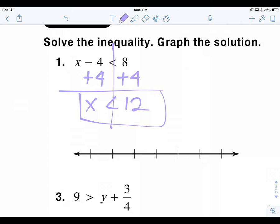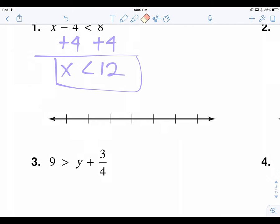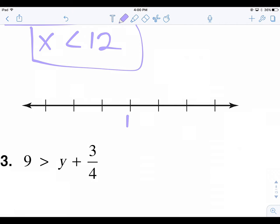So that is the inequality, and now we have to graph it. So where's 12? Well, 12 is here. And I'm going to count by 1, so this will be 9. And x is less than 12. So we're to the left of 12. Open point, since 12 is not included. x has to be less than 12.